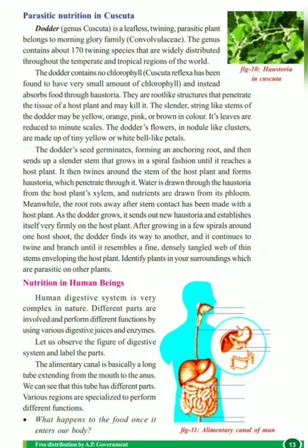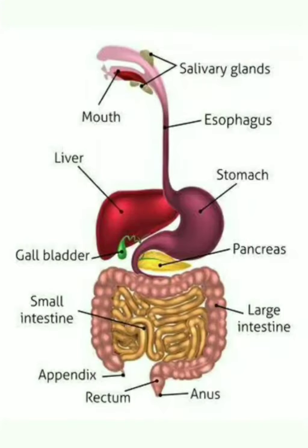Now let us learn about nutrition in human beings and the human digestive system. The human digestive system is very complex, with different parts performing different functions. The alimentary canal is basically a long tube extending from the mouth to the anus. Its parts include the mouth, oral or buccal cavity, esophagus, stomach, duodenum, small intestine, large intestine, rectum, and anus. The duodenum is connected with the liver and pancreas, which release bile juice and pancreatic juice into the small intestine.